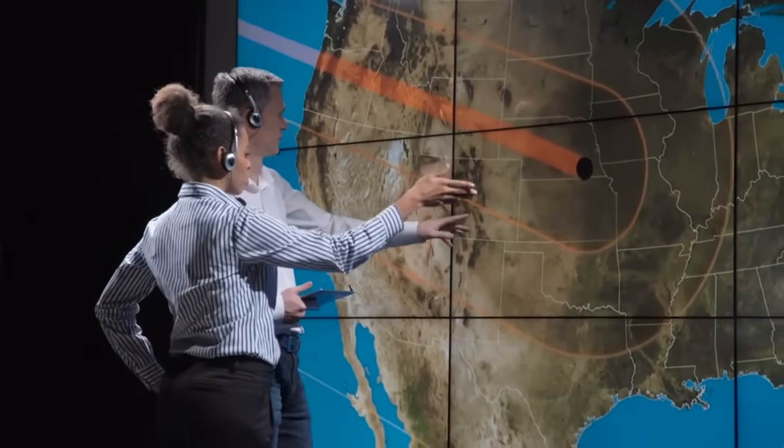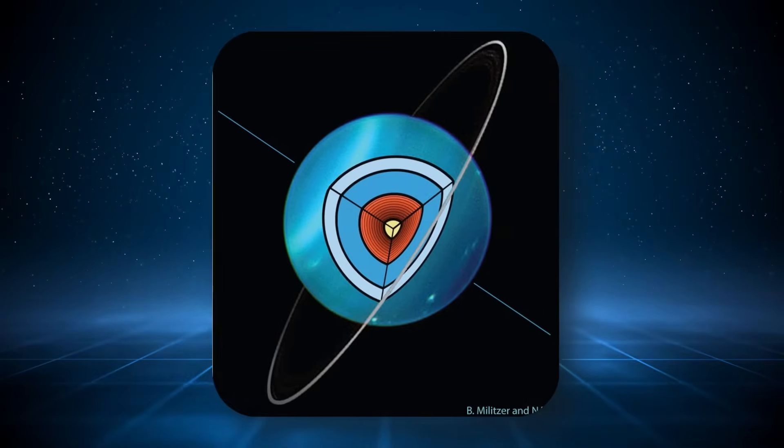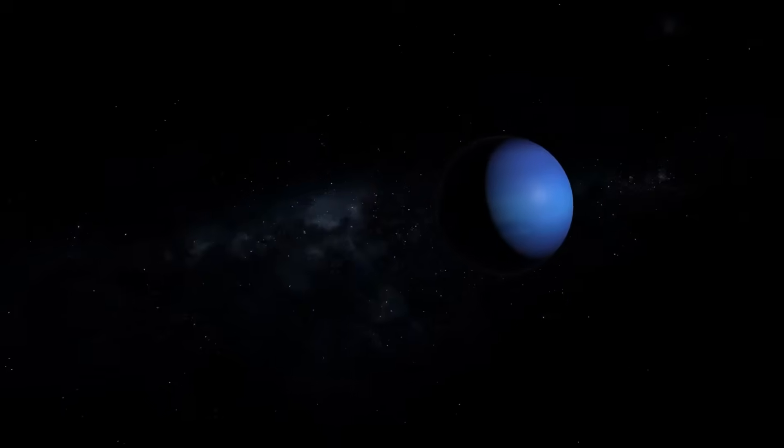This would account for its high density, anomalous magnetic field, and energy dynamics. If true, Neptune could be the solar system's silent wanderer, carrying with it clues from regions closer to the sun, or even interstellar material incorporated into its matrix during migration.